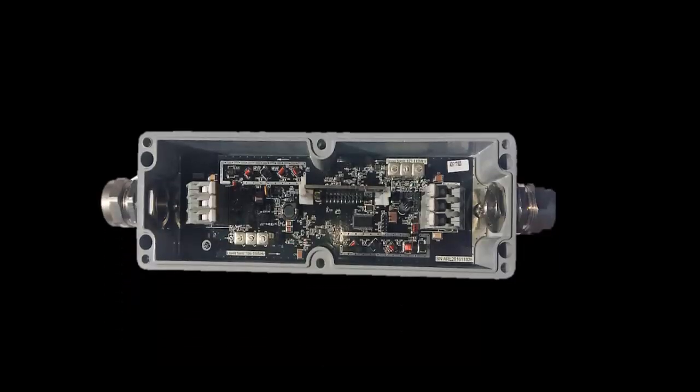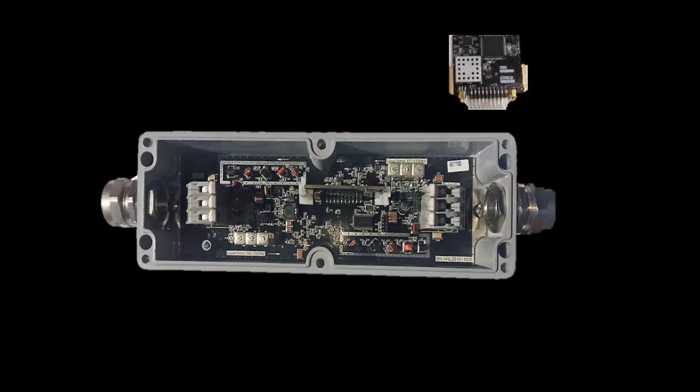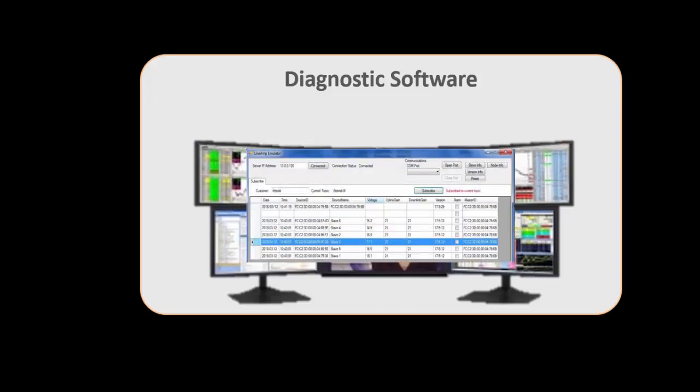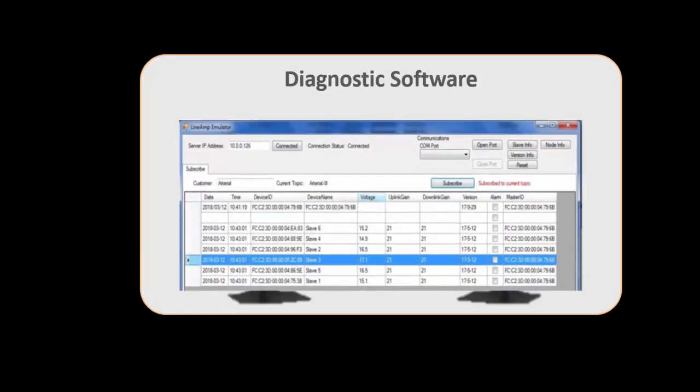All diagnostic line amplifiers can be upgraded to remote diagnostic line amplifiers by installing a diagnostic modem into the amplifier. This will then give the user the ability to remotely monitor the status of the amplifier. This upgrade could be done during or after installation.